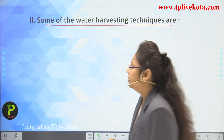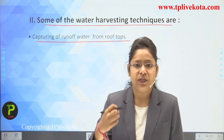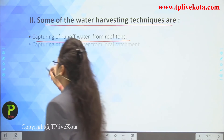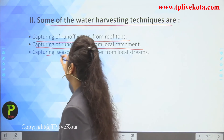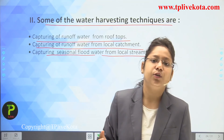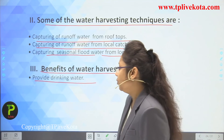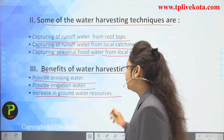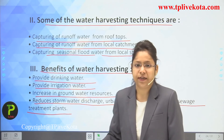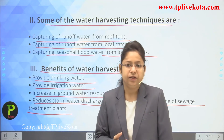Modern water harvesting techniques include: capturing runoff water from rooftops — rooftops are connected with pipes that supply rain water to underground tanks built in houses; capturing runoff water from local catchments; and capturing seasonal flood water from local streams, which is drained into large channels and transferred to big dams and rivers. Benefits of water harvesting include: providing drinking water, irrigation water, increasing groundwater resources, and reducing storm water discharge, urban flooding, and overloading of sewage treatment plants.